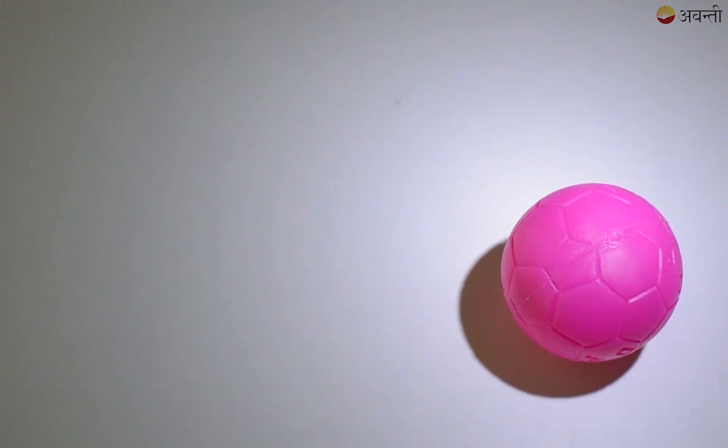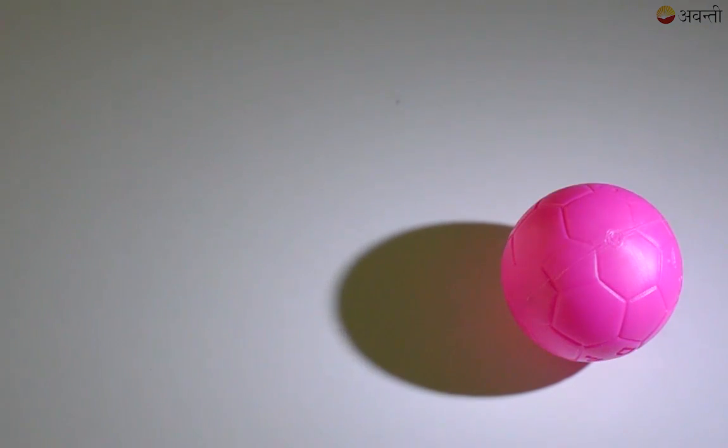Now I am going to tilt the torch a little and when I start tilting the torch, the shadow becomes a little elongated and now it has taken a new shape. This shape will be called an ellipse.